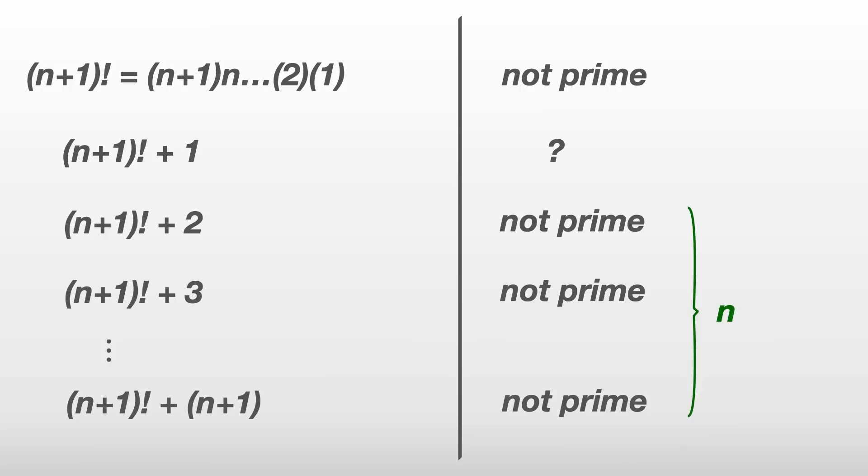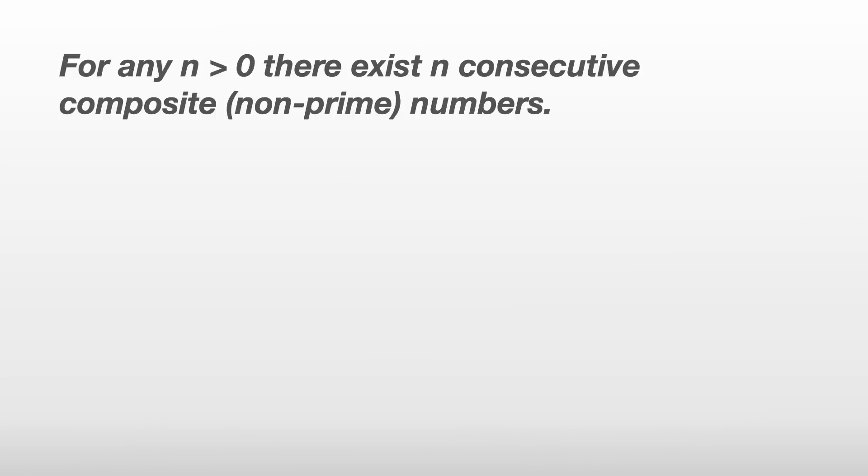Therefore, we've proved our theorem that for any n, there exist at least n consecutive composite numbers. Specifically, n plus 1 factorial plus 2 to n plus 1 factorial plus n plus 1.